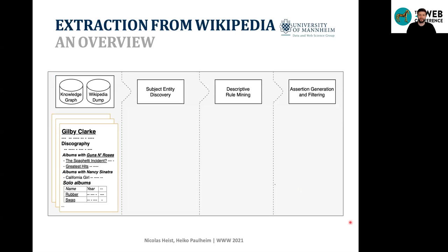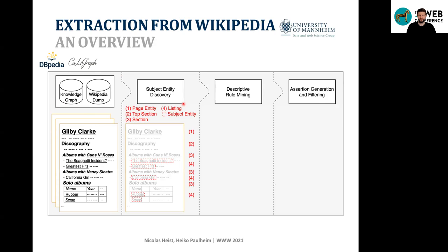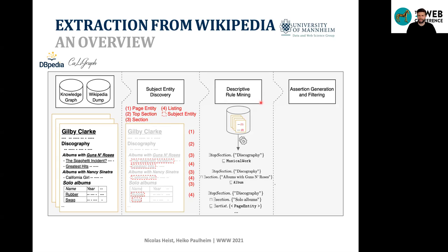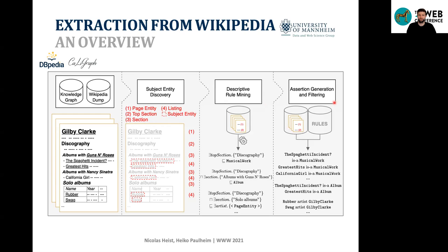Let me present an extraction pipeline for Wikipedia. We start with a Wikipedia dump and a knowledge graph to extend, using it for distant supervision — in our experiments we used DBpedia and also Caligraph, a Wikipedia-based knowledge graph with a rich ontology based on categories and list pages. In the first step, subject entity discovery, we find all relevant listings and their subject entities. Then in descriptive rule mining, we generate rule candidates and select rules based on the defined metrics. Finally, in assertion generation and filtering, we apply the rules and filter unlikely assertions.